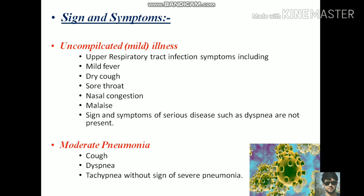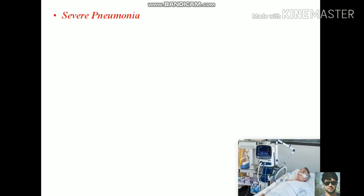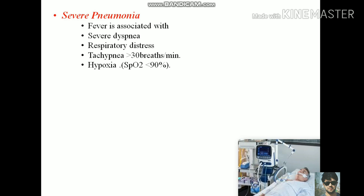In moderate pneumonia, respiratory symptoms such as cough, shortness of breath (dyspnea), or tachypnea in children are present without signs of severe pneumonia. In severe pneumonia, fever is associated with severe dyspnea, respiratory distress, tachypnea, and hypoxia, with oxygen saturation less than 90 percent; children may show signs of cyanosis.